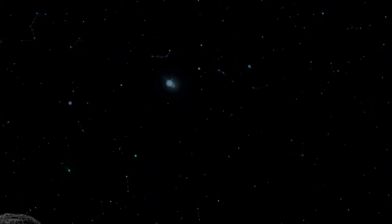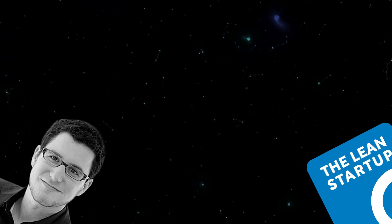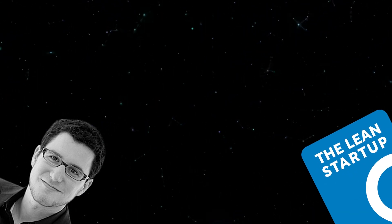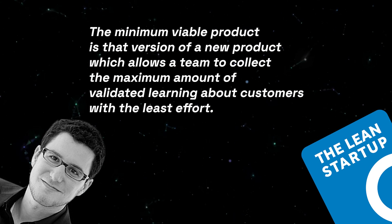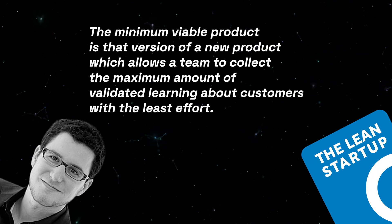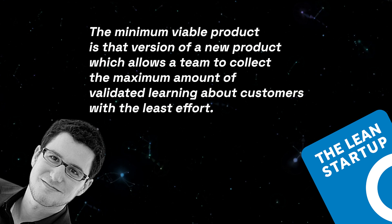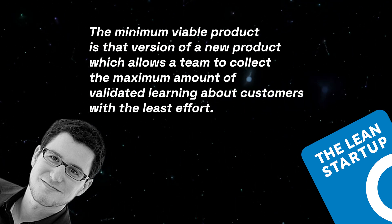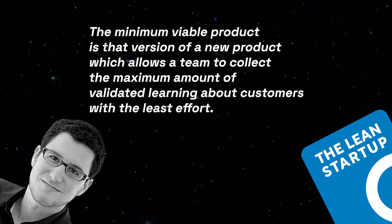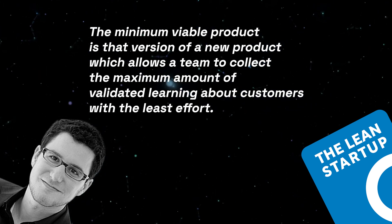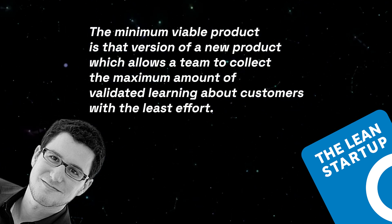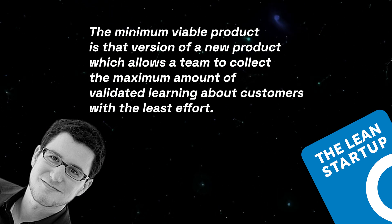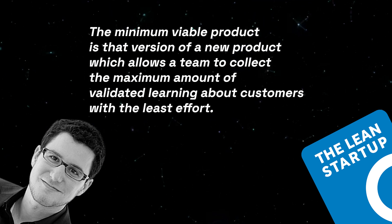So what is an MVP? According to Eric Ries, the author of The Lean Startup, the Minimum Viable Product is that version of a new product which allows a team to collect the maximum amount of validated learning about customers with the least effort.